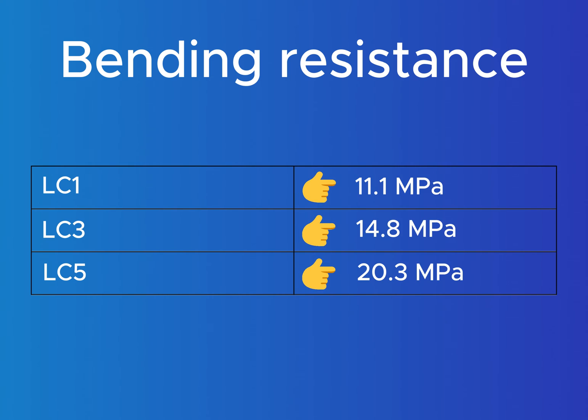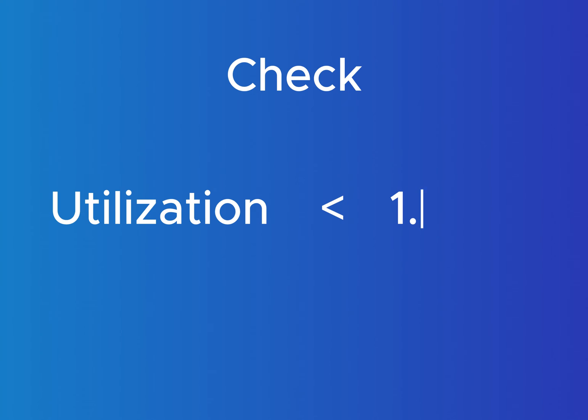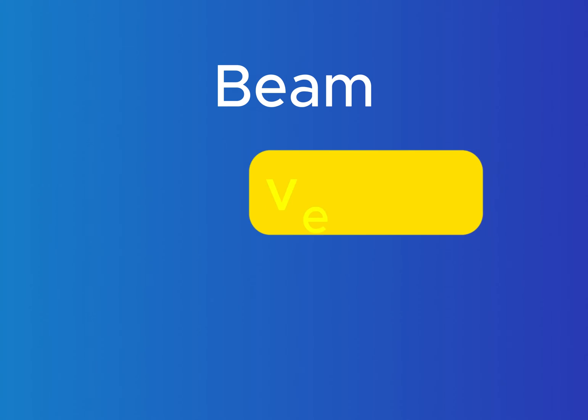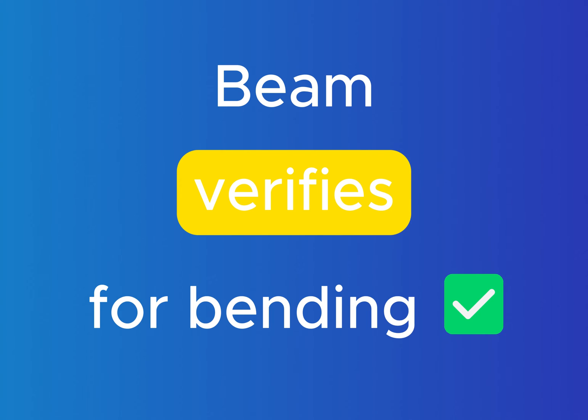Okay, now let's check if the utilization is less than 1 by dividing the resistance stresses through the design stress. As we can see, the highest utilization is 0.88 which is less than 1. This means that the beam verifies for bending. That's great and we can now move on to shear.